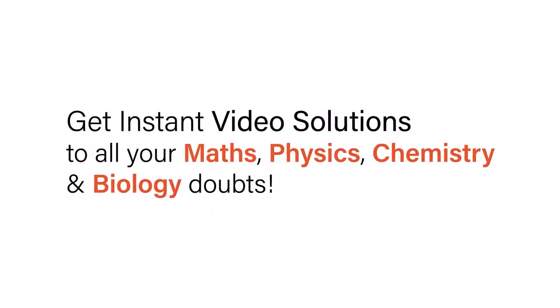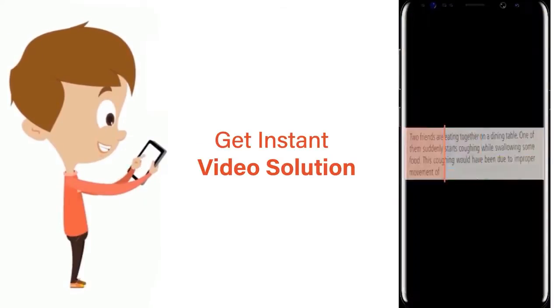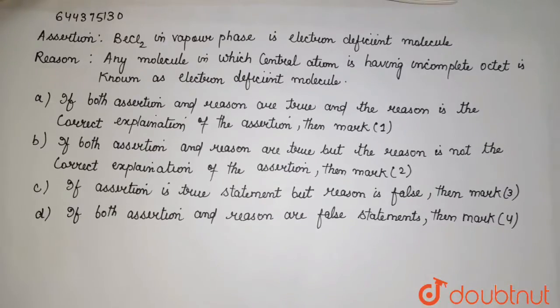With Doubtnut, get instant video solutions to all your maths, physics, chemistry, and biology doubts. Just click the image of the question, crop the question, and get instant video solution. Download Doubtnut app today. Assertion: BeCl2 in vapor phase is electron deficiency molecule.